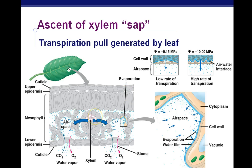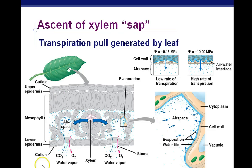Once that water gets to the leaf, it doesn't stay in the xylem anymore. The water potential is much lower in the mesophyll — the spongy mesophyll airspace within the leaf. So the water moves from higher water potential inside the xylem to lower water potential in the leaf airspace. The water potential is even lower outside the leaf, so water moves from the mesophyll airspace to outside the leaf. This is basically osmosis of water, moving high to low.